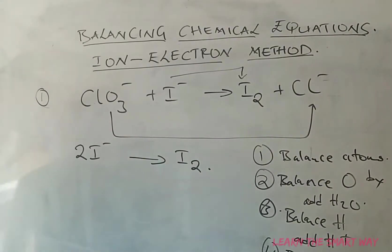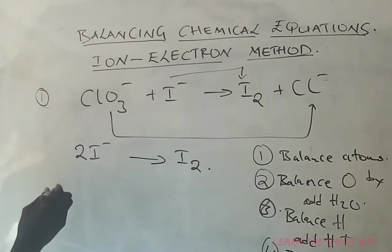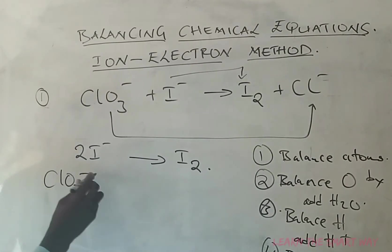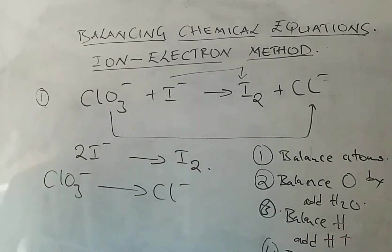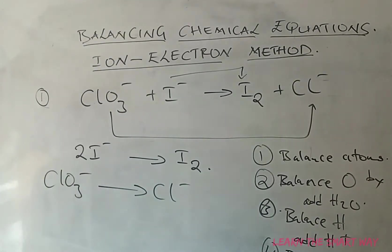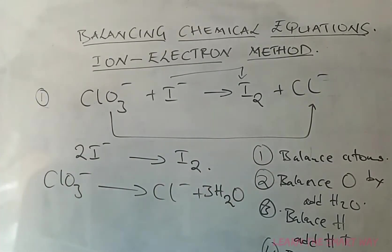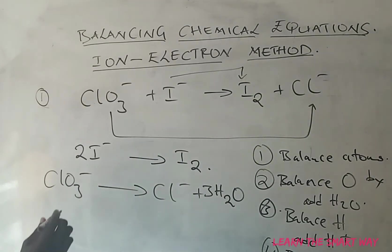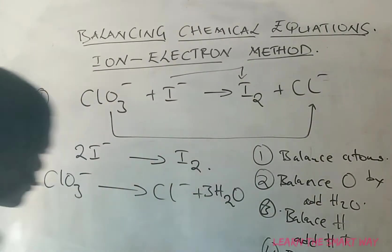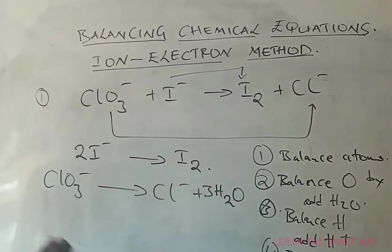Now the second half-reaction: ClO₃⁻ giving us Cl⁻. The first step is to balance the atoms. We have chloride balanced. There is no hydrogen, but there are oxygen atoms — three of them on the left — so we add three water molecules to the right-hand side. That introduces hydrogen on the right, so we add six hydrogen ions on the left-hand side to balance hydrogen.